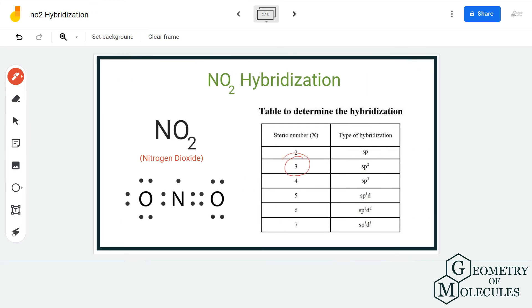As a result, nitrogen will have three hybrid orbitals to accommodate these two bonding pairs of electrons and this one electron which is not forming any bonds. As it will have three hybrid orbitals and its steric number is three, it corresponds to sp2 hybridization on this table, which means that NO2 has sp2 hybridization.